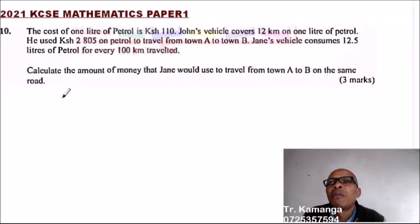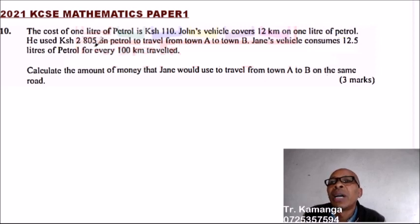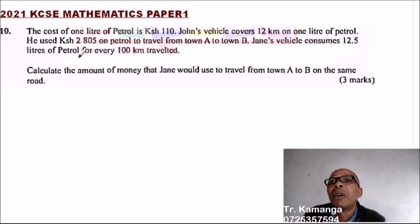Question number 10: the cost of one liter of petrol is 110 Kenyan shillings. John's vehicle covers 12 kilometers on one liter of petrol. He used 2805 Kenyan shillings on petrol to travel from town A to B. Jane's vehicle consumes 12.5 liters of petrol for every 100 kilometers traveled. Calculate the amount of money Jane would use to travel from town A to B on the same road.